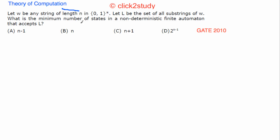What is the minimum number of states in a non-deterministic finite automaton that accepts L? So let's understand what's happening here. w is any string of length n. Basically, you can have any string of length n.